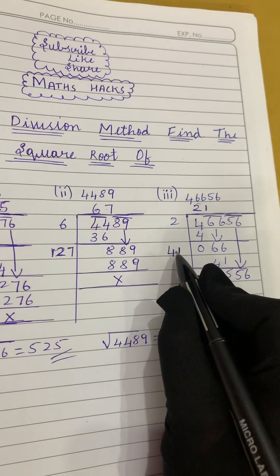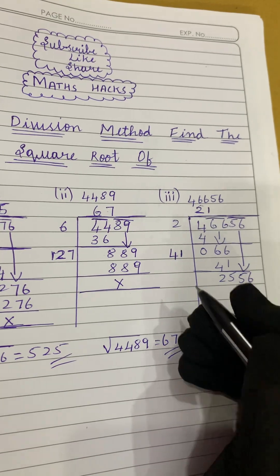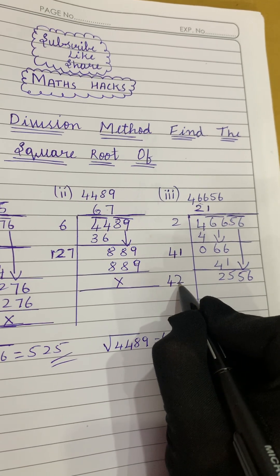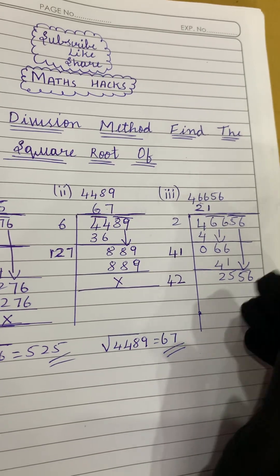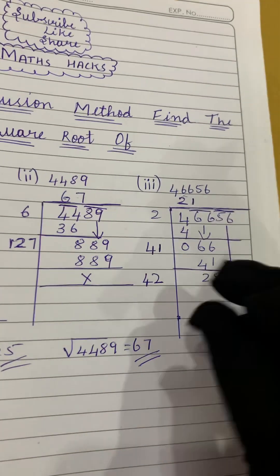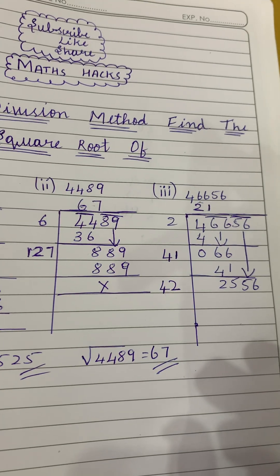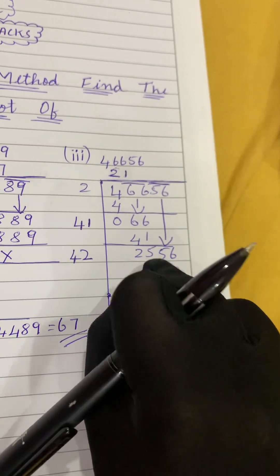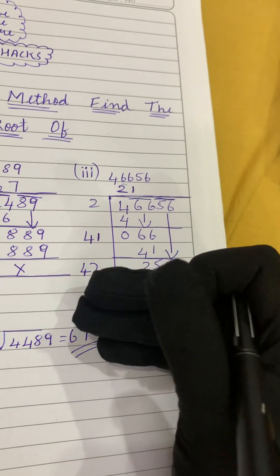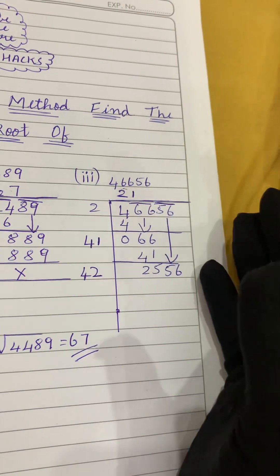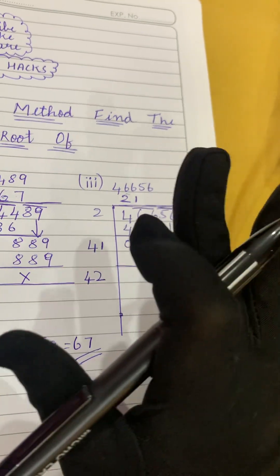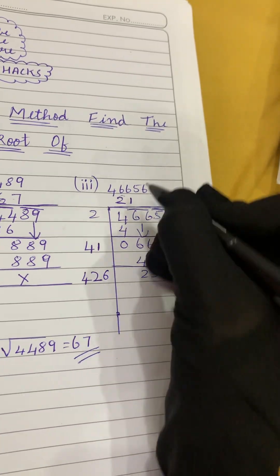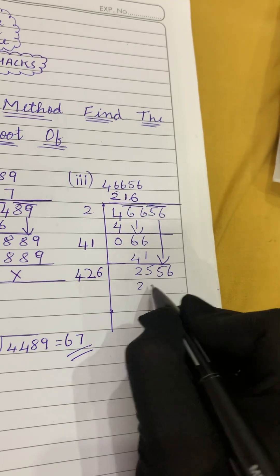We bring the next pair down: 56, giving us 2556. We copy 4 here since the double of 2 is 4. The double of 1 is 2, so we have 42. Now we need a digit such that 42_ × _ gives exactly 2556. Trying 425 × 5 doesn't work. Let's try 6: 426 × 6 = 2556.